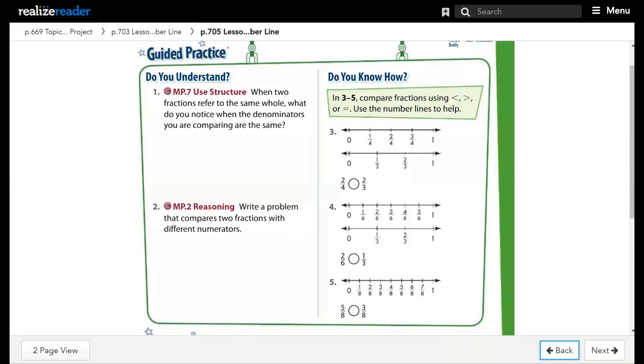In 3 to 5, compare fractions using less than, greater than, or equal. Use the number lines to help. So here we will compare 2 over 4 and 2 over 3. 2 over 4 which is here, 2 over 3 which is here. So the one farther on the right will be greater, so 2 over 3 is greater than 2 over 4.